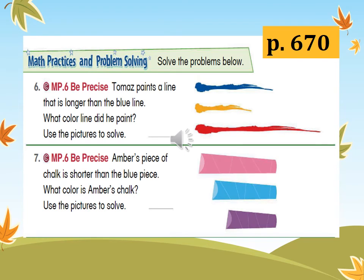Let's do the math practices and problem solving. Number six: Thomas paints a line that is longer than the blue line. What color line did he paint? Use the pictures to solve — is it the blue one, the yellow one, or the red one? Write blue, yellow, or red in the blank. Now number seven: Amber's piece of chalk is shorter than the blue piece. What color is Amber's chalk? Use the pictures to solve — write pink, blue, or purple. Are you done? Great job.